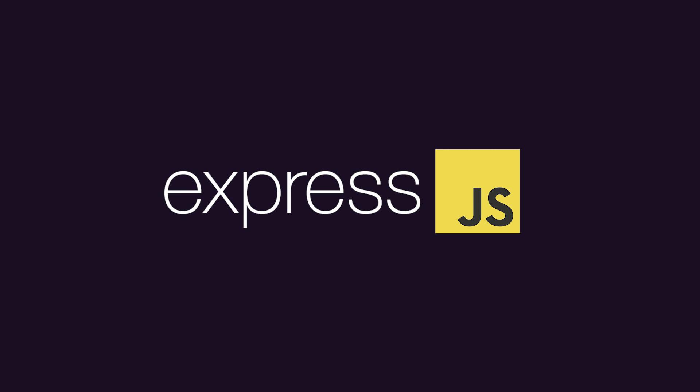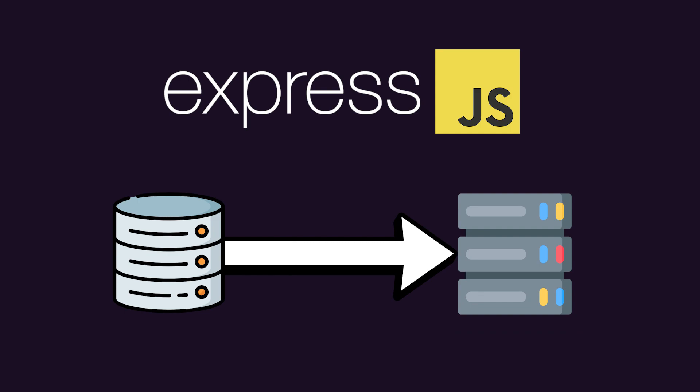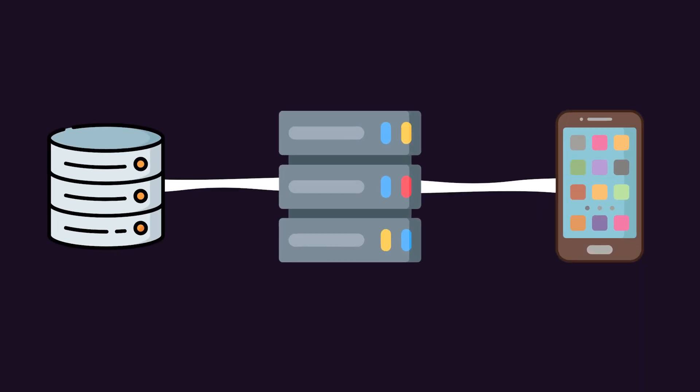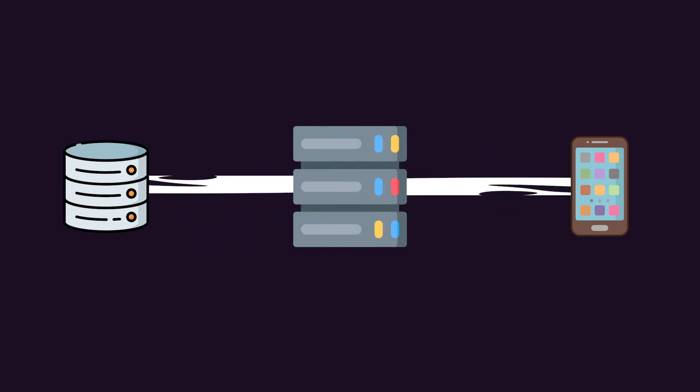While getting used to Express, also take some time to invest in how you can connect a database to your server. Whether you want to use a traditional SQL database or a more fancy NoSQL database like MongoDB is completely up to you. I got started with MongoDB, which was super easy to set up locally. You can also use Atlas in the cloud and connect to a cloud instance of your Mongo database. By connecting your server to a database, you really learn about the essentials of an API — how to grab data from the database, transform it, and then return it back to the client.